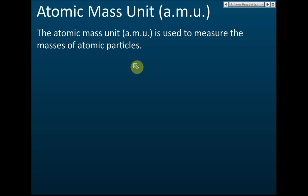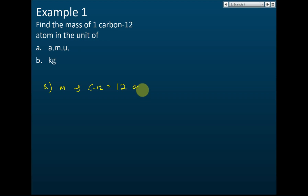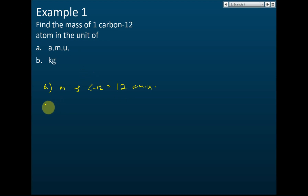Example one: find the mass of one carbon-12 atom in units of AMU. This is very easy — we learned that the mass of carbon-12 is 12 AMU, from the definition of atomic mass unit: one AMU equals one-twelfth of the mass of carbon-12, therefore the mass of carbon-12 is 12 AMU. Part b: find the mass of carbon-12 in kg.